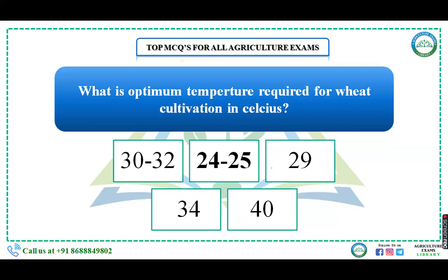What is the optimal temperature required for wheat cultivation in Celsius? Options: 30-32°C, 24-25°C, 29°C, 34°C, 40°C. For wheat, the minimum temperature required is 3-5°C, the optimum temperature is 24-25°C, and the maximum temperature is 30-45°C. So the right answer is 24-25°C. Similarly, you should remember the optimum, minimum, and maximum temperatures for rice, maize, and sorghum.